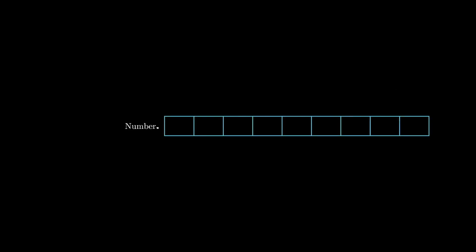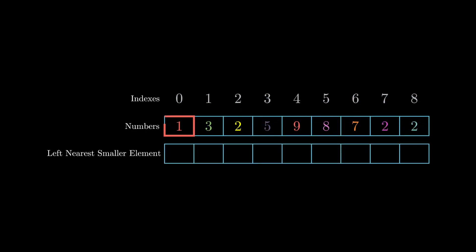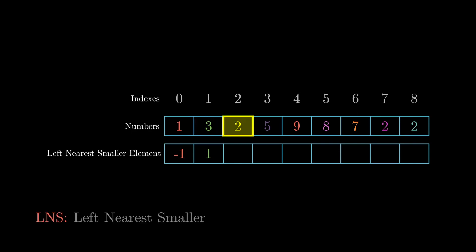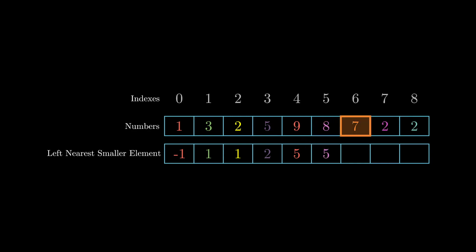For example, consider this array. For 1, there is no element to its left, so minus one will be the LNS of 1. The LNS of 3 is 1, and the LNS of 2 is also 1. The LNS of 5 is 2, the LNS of 9 is 5, the LNS of 8 is 5, the LNS of 7 is 5, and the LNS of the last 2 is 1.